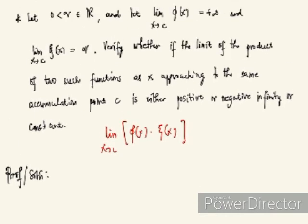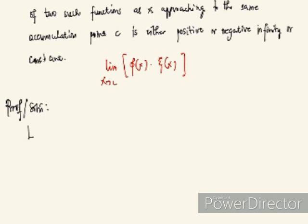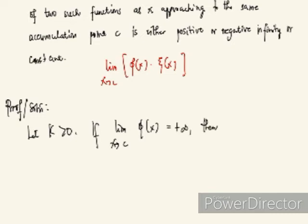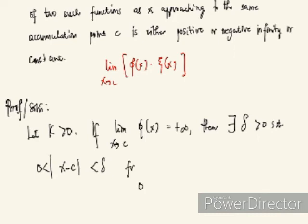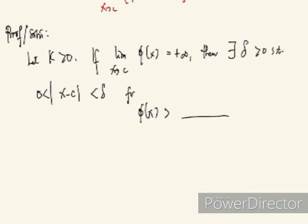According to the definition of the infinite limit, we introduce a constant: let k be greater than 0. Since the limit of φ(x) as x approaches c equals positive infinity, there exists a delta₁ greater than 0 such that when 0 < |x − c| < delta₁, we have φ(x) greater than something expressible in terms of k — we will determine that later.